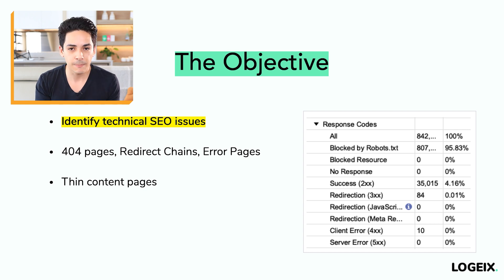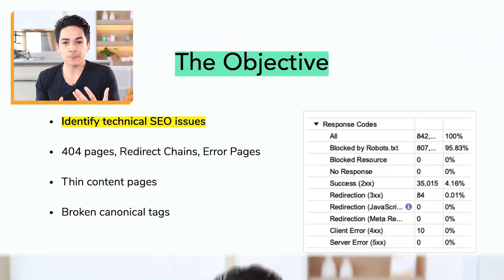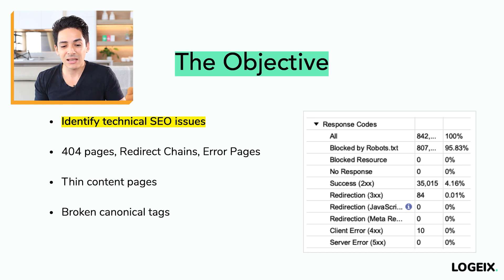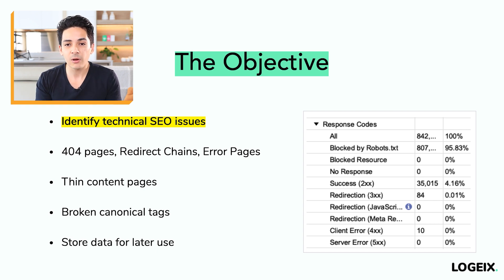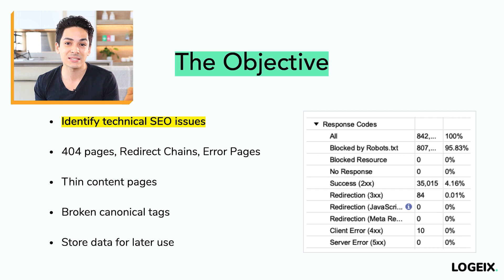You're also looking for things like thin content pages — pages with no real unique content — and broken canonical tags and other technical issues. We're going to have an entire module on technical SEO, so don't worry if this doesn't make sense yet. Once you've completed this, you want to store the crawl data for later use, as it's massively valuable for other parts of the campaign. Don't delete it and have to rerun the process later — it wastes time.